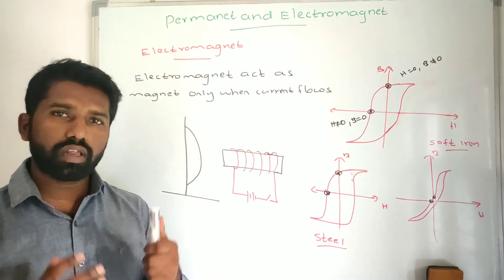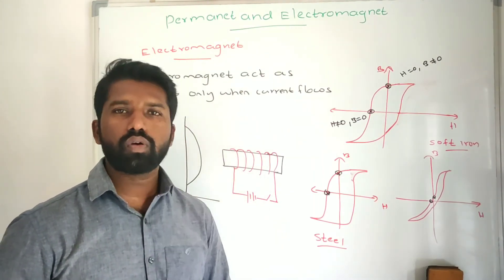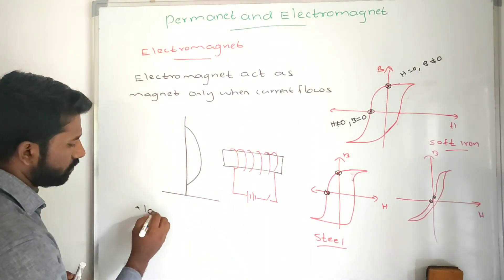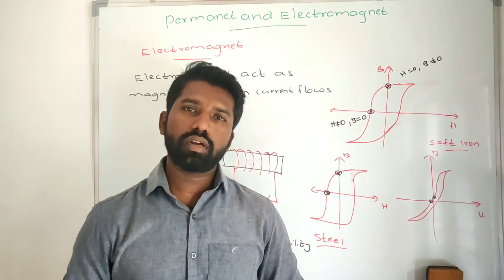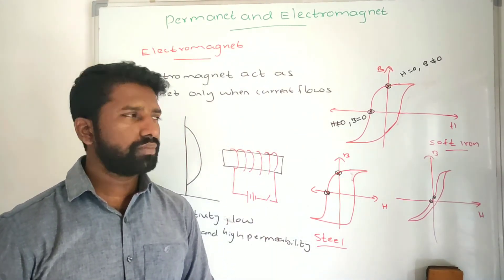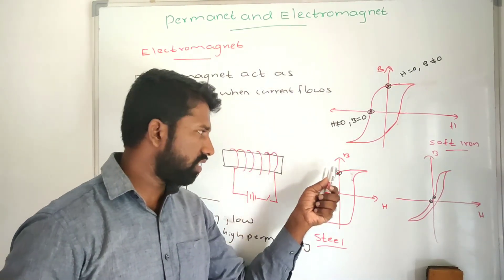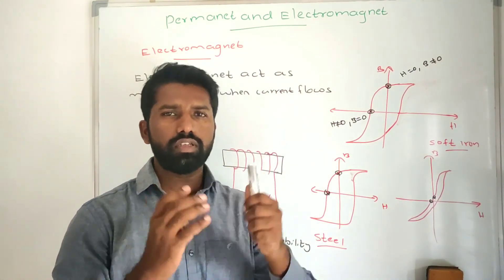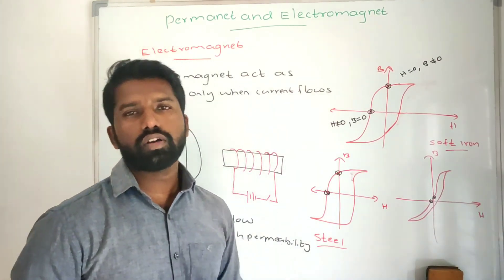The material chosen for an electromagnet should have low retentivity, low coercivity, and high permeability. This allows the material to quickly lose and quickly gain magnetic power. If you look at the hysteresis loop of steel, it has high retentivity and high coercivity, but soft iron has low retentivity and low coercivity, making soft iron the better choice for an electromagnet.